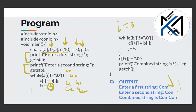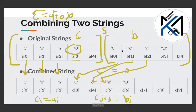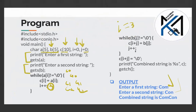Then j is equal to 0. You have to copy the value of A into C. Using the formula c[i+j] = b[j]: in the first case, i value is 3 and j value is 0, so c[3] = b[0] is copied.